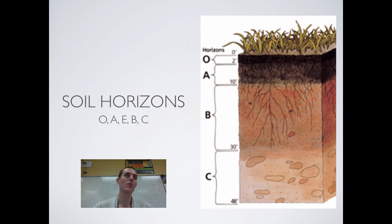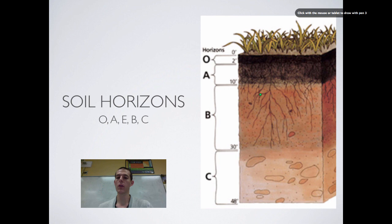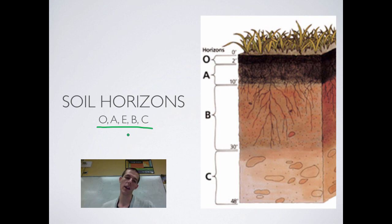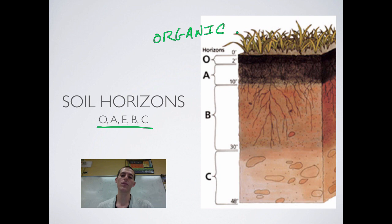One thing that AP might want to test you on is the soil horizons — basically the layers of the soil. You can think of soil as being like a cake. The order is O-A-E-B-C. A mnemonic to remember: Organic Arthropods Eat Blind Chickens. Let's walk through each one. O is for organic — this is the very top layer of the soil where your living and recently dead organisms live. This is just the very top living or once-living layer of the soil.